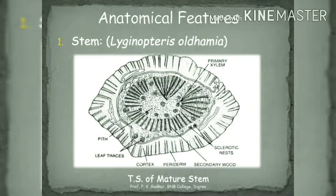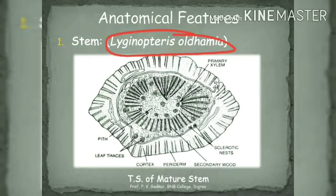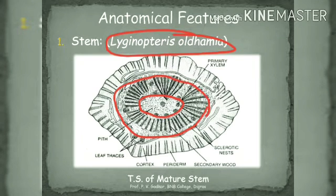Regarding the anatomical features of Lyginopteris, first we discuss the anatomy of the stem, found and named as Lyginopteris oldhamia. The stem was beautifully preserved in the form of petrifaction type of fossils. The transverse section of the stem shows the presence of a meso-arch siphonostele with a well-developed centrally located pith. The structure is divided into two broad regions: outer cortical region and inner secondary wood.